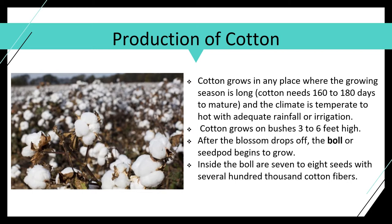China has some desert but also some very warm areas. Countries in South America, the Indian peninsula, and African nations also produce cotton because they have that 180-day growing season and either adequate rainfall or irrigation. Oddly, the cotton boll — that puff you see — will not form if the temperature is below 70 degrees.